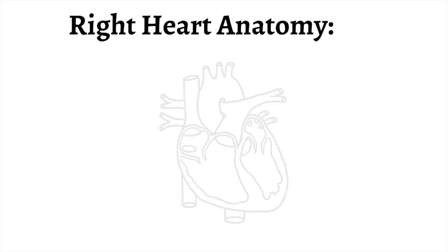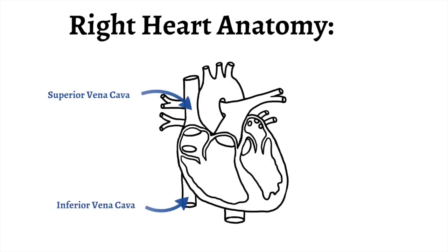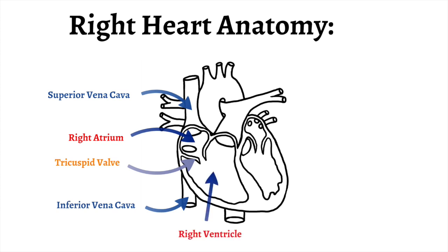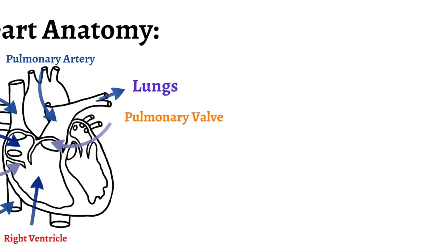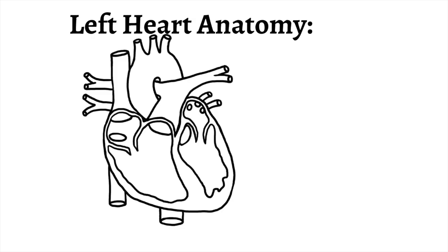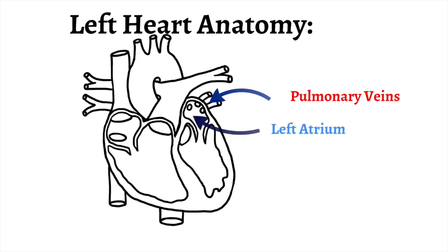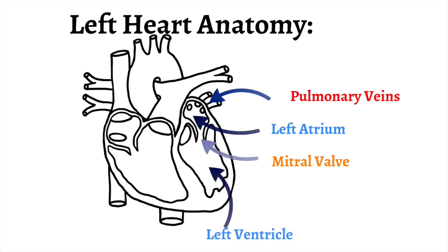The inferior vena cava and superior vena cava bring deoxygenated blood into the right atrium. The right atrium contracts and pushes its blood past the tricuspid valve into the right ventricle. The right ventricle pushes blood past the pulmonary valve into the pulmonary artery, which courses to the lungs. Once the deoxygenated blood is oxygenated in the lungs, it comes via the pulmonary veins into the left atrium. The left atrium pushes blood past the mitral valve into the left ventricle. The left ventricle pushes blood past the aortic valve into the ascending aorta, where oxygenated blood is distributed throughout the body via the arterial system.